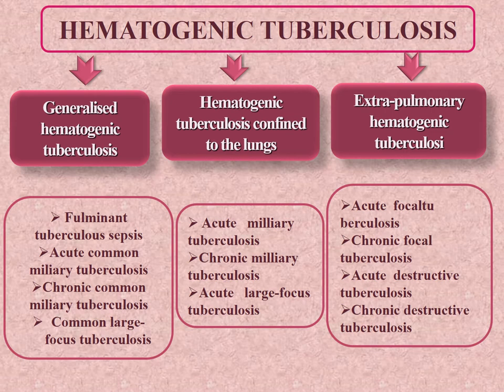Hematogenic tuberculosis is characterized by a productive inflammatory reaction, in contrast to the exudative reaction occurring in primary infection. The process is prone to generalization. There are three variants of hematogenic tuberculosis: generalized hematogenic tuberculosis, hematogenic tuberculosis confined to the lungs, and extrapulmonary hematogenic tuberculosis.